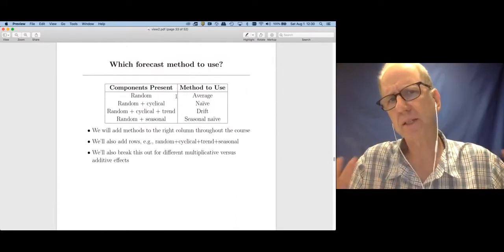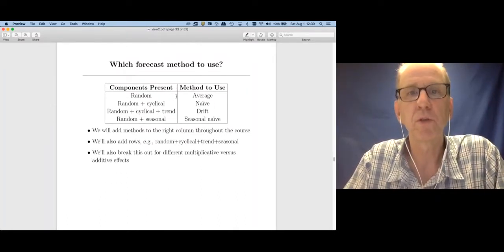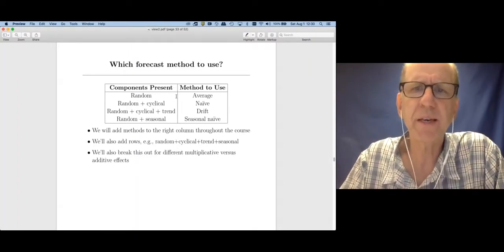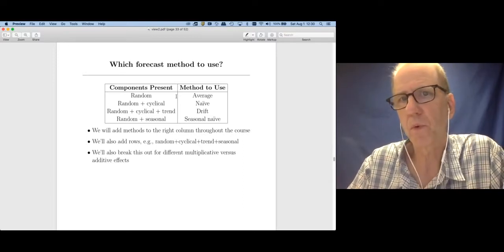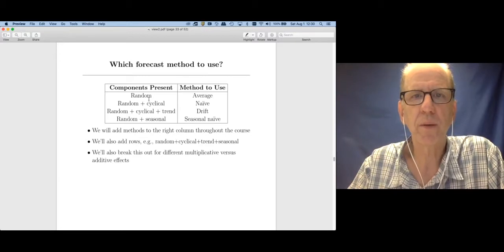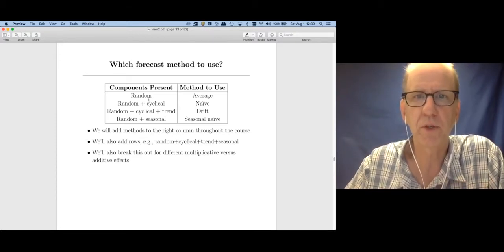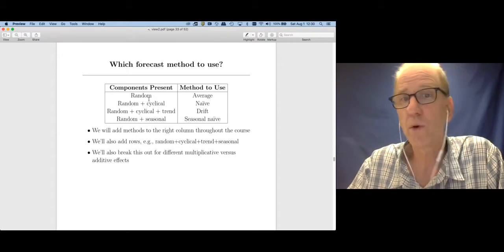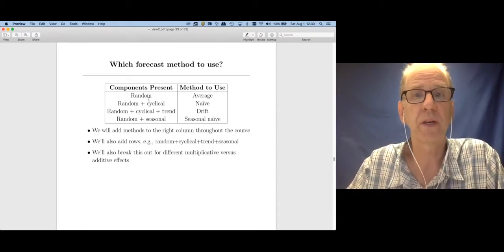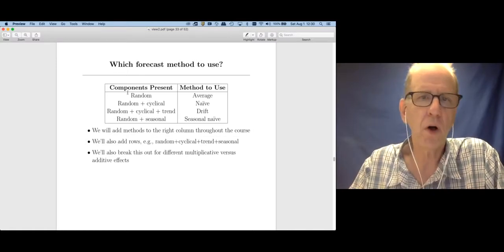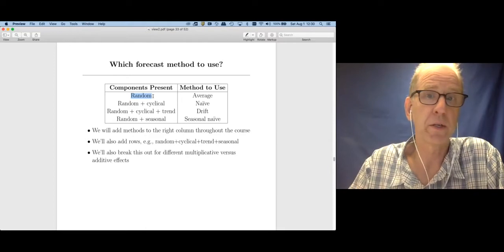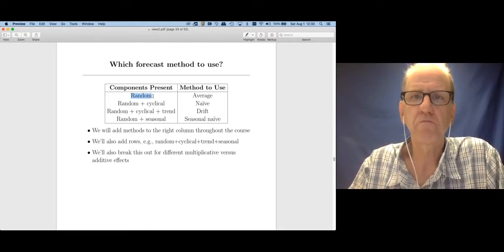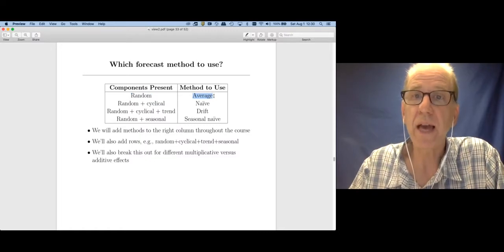My last slide for this unit is going to be a slide that we keep adding to. What I want to emphasize here is the method we're going to choose depends on what components of the time series are present. Remember I said there are four components of a time series: random, cyclical, trend, and seasonal. If all we have present is random, so there is no cyclical variation, no auto correlations going on, there's no trend and there's nothing seasonal, the only method that makes sense is the average method that we went over in the previous video.